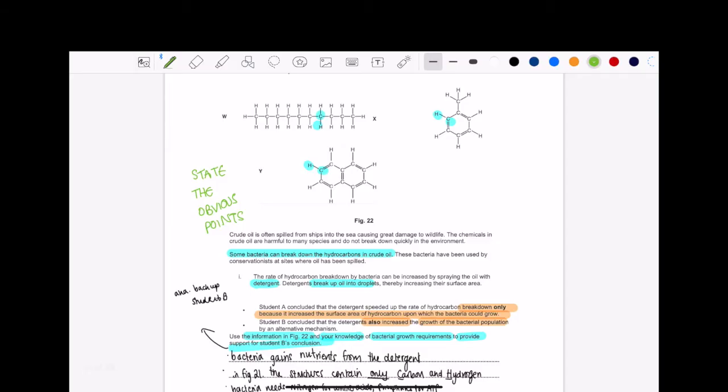Interesting. They're all hydrocarbons. They all have carbon and hydrogen atoms only. Let's read it. So the first two sentences is saying how crude oil is spilt and it's harmful. Then the interesting part comes here. Some bacteria can break down the hydrocarbons in crude oil. Then it says the rate of hydrocarbon breakdown by bacteria can be increased by spraying the oil with detergent. Detergent breaks up oil into droplets, thereby increasing their surface area. So we have the crude oil, right? Then we spray some detergent that breaks it up into droplets. That means that, you know, there's greater surface area.